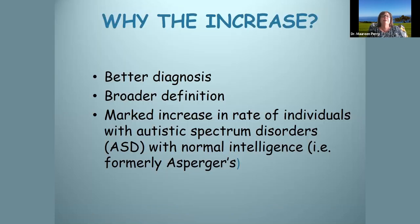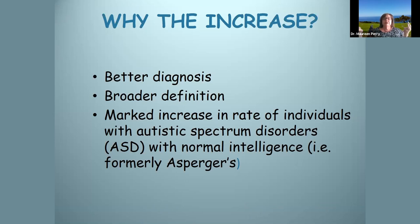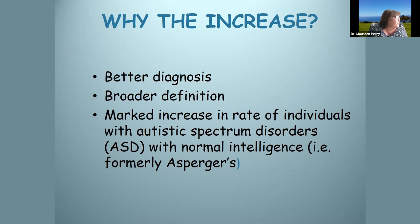Why the increase? Number one, we're better at diagnosis. Number two, it's a spectrum — now there's a broader definition. We see people with ASD who have normal intelligence or even above-average intelligence. We formerly called these individuals Asperger's — that's no longer a diagnosis. New cases are all called autistic spectrum disorder. You may still meet adults who were diagnosed with Asperger's when it was a valid diagnosis.